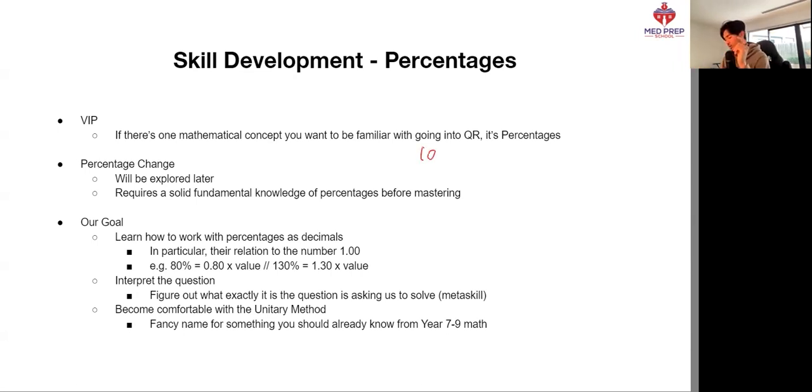So if I asked you what 100% of the number two is, we'd be pretty comfortable in saying it's just two, just as we'd say 1.00 times the number two is equal to two. The same thing happens in these examples here, where 80% of a certain value is simply 0.8 times the value. And conversely, with a number higher than 100, 130% of a value is 1.3 times that value.